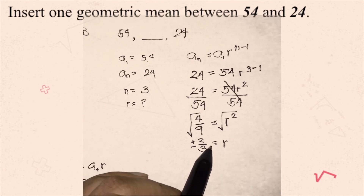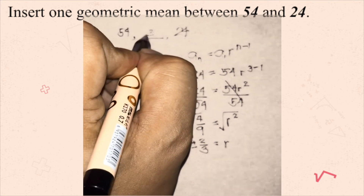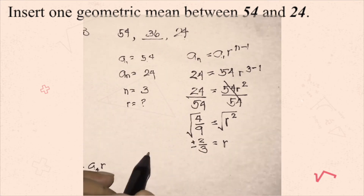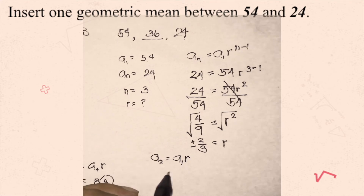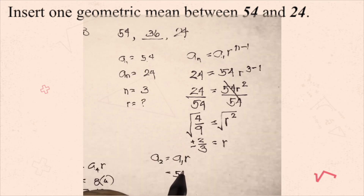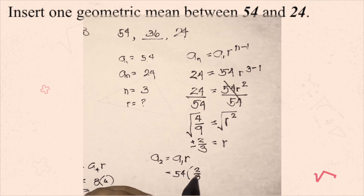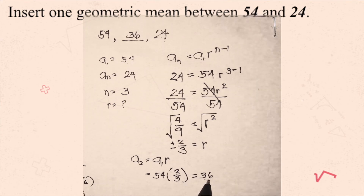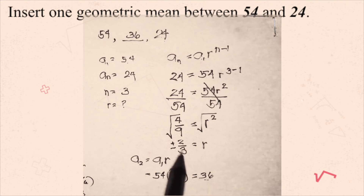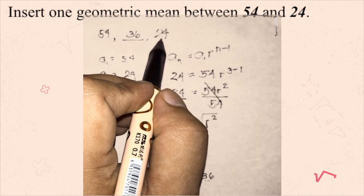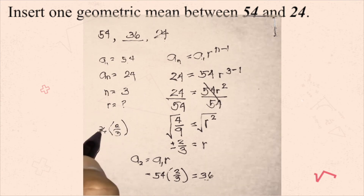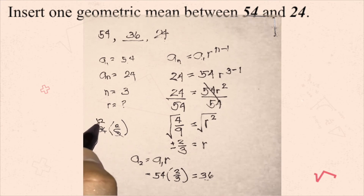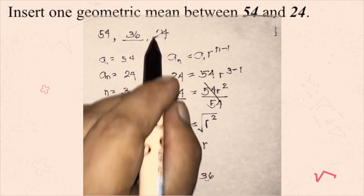Using positive 2/3: a sub 2 equals a sub 1 times r, which is 54 times 2/3, giving 36. To verify, 36 times 2/3 equals 24 — confirmed. So one geometric mean with r equals positive 2/3 is 36.